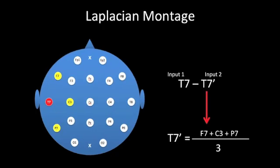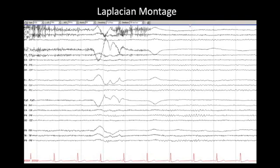When looking at T7, for example, we would derive T7' as an average of its three most adjacent neighbors. Here is an example of how a Laplacian montage might be laid out — again, in a very similar way to our other montages: left over right, with temporal chains, then parasagittal chains, then the midline. Let's take the example of a right temporal sharp wave as seen on an anterior-posterior bipolar montage.